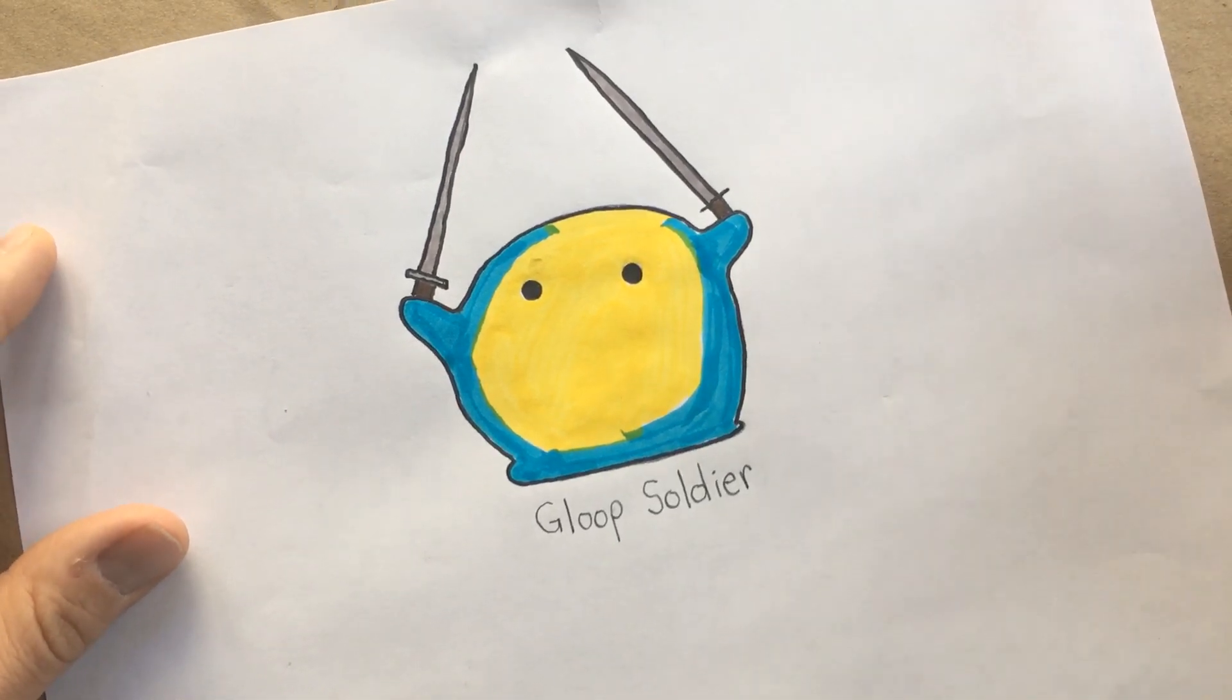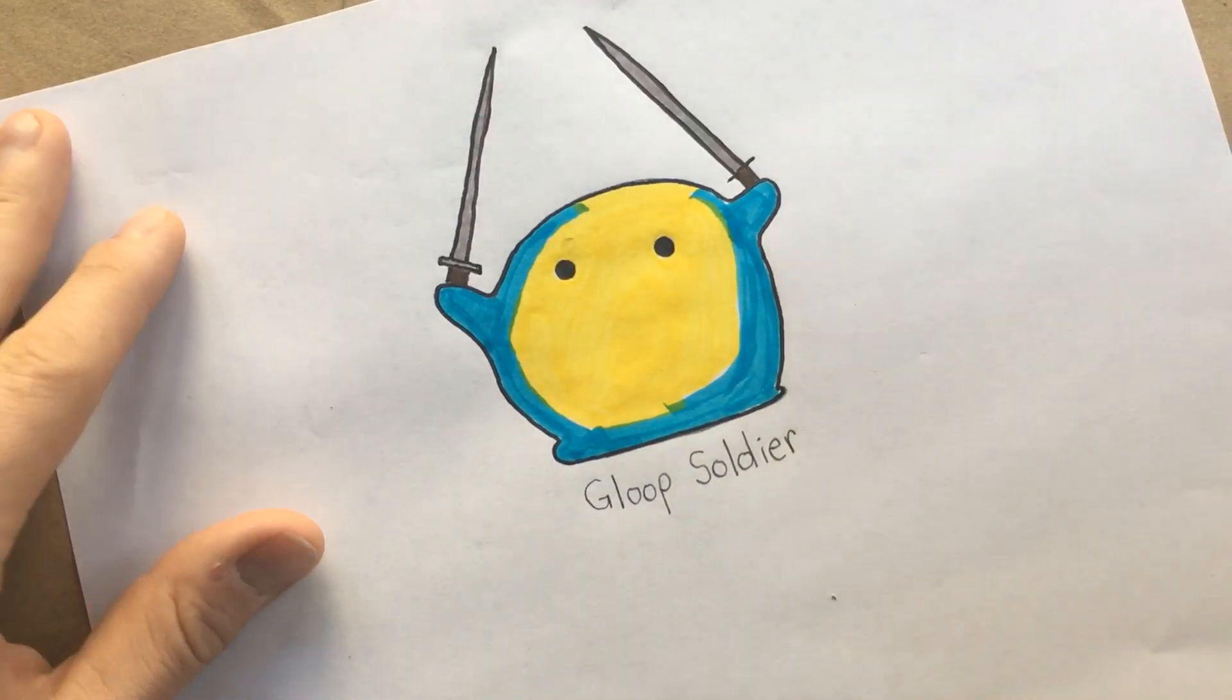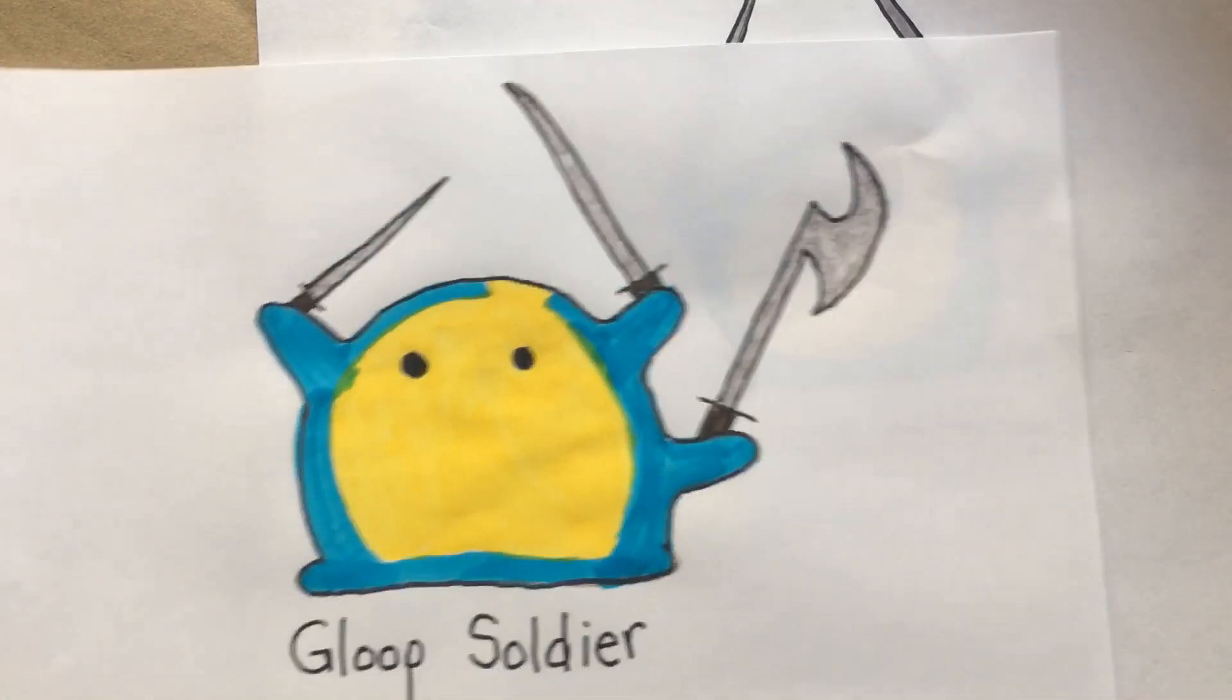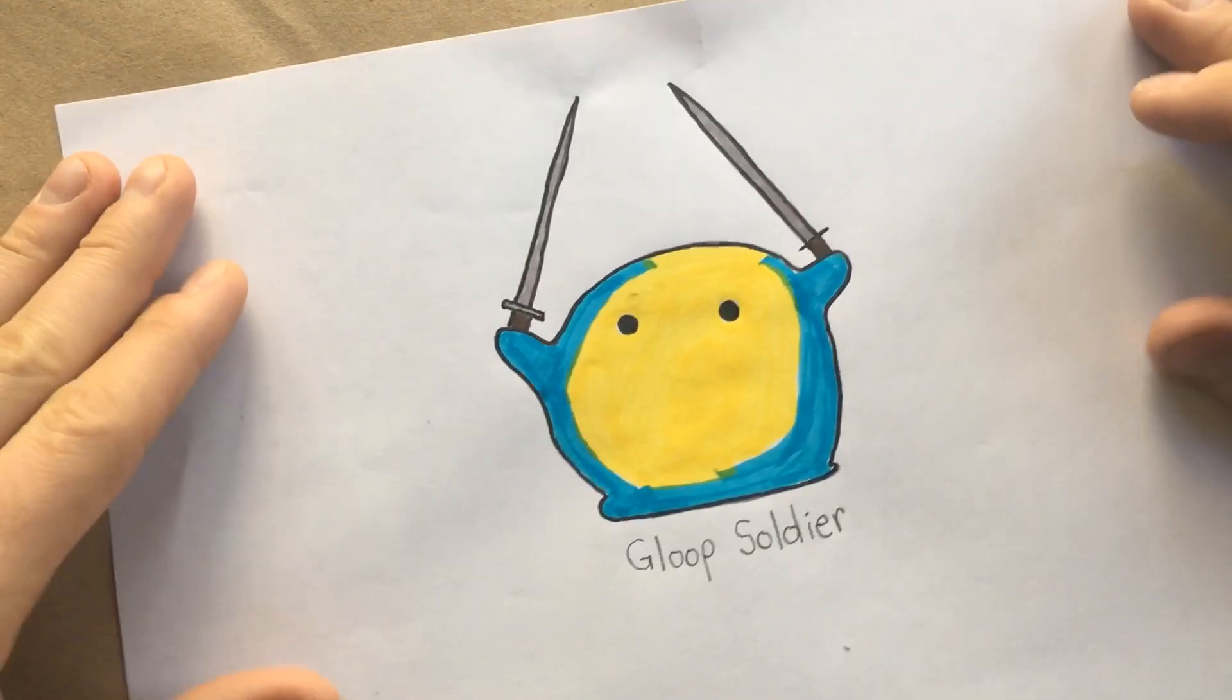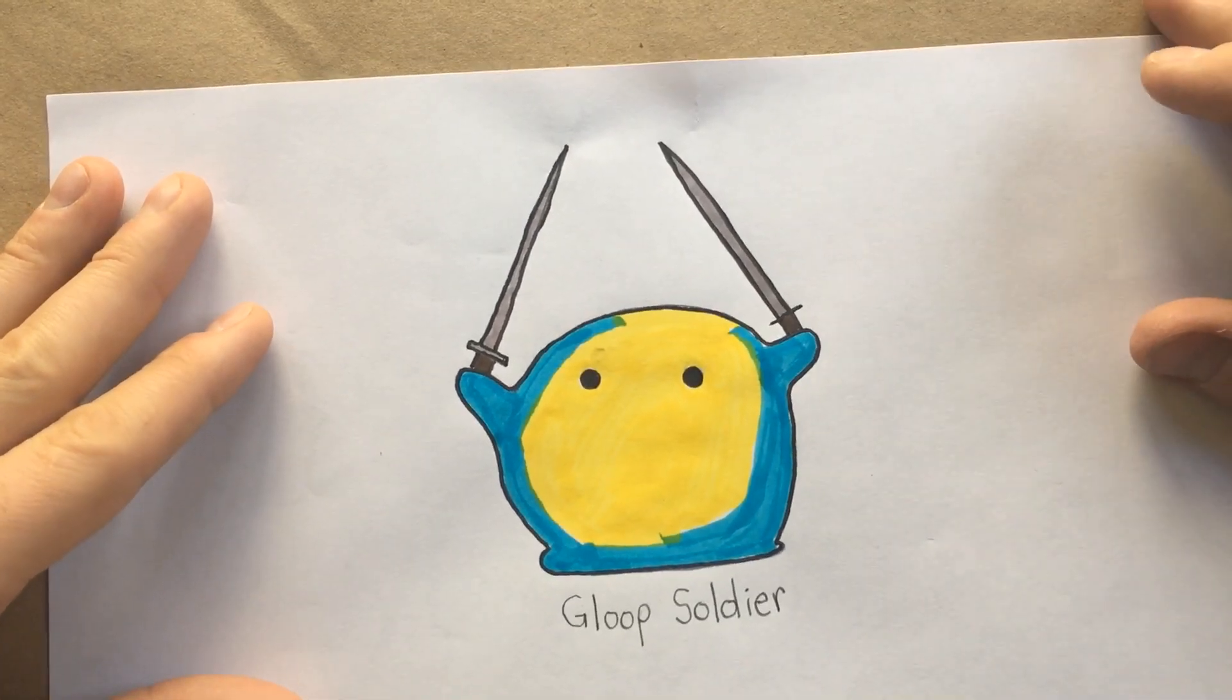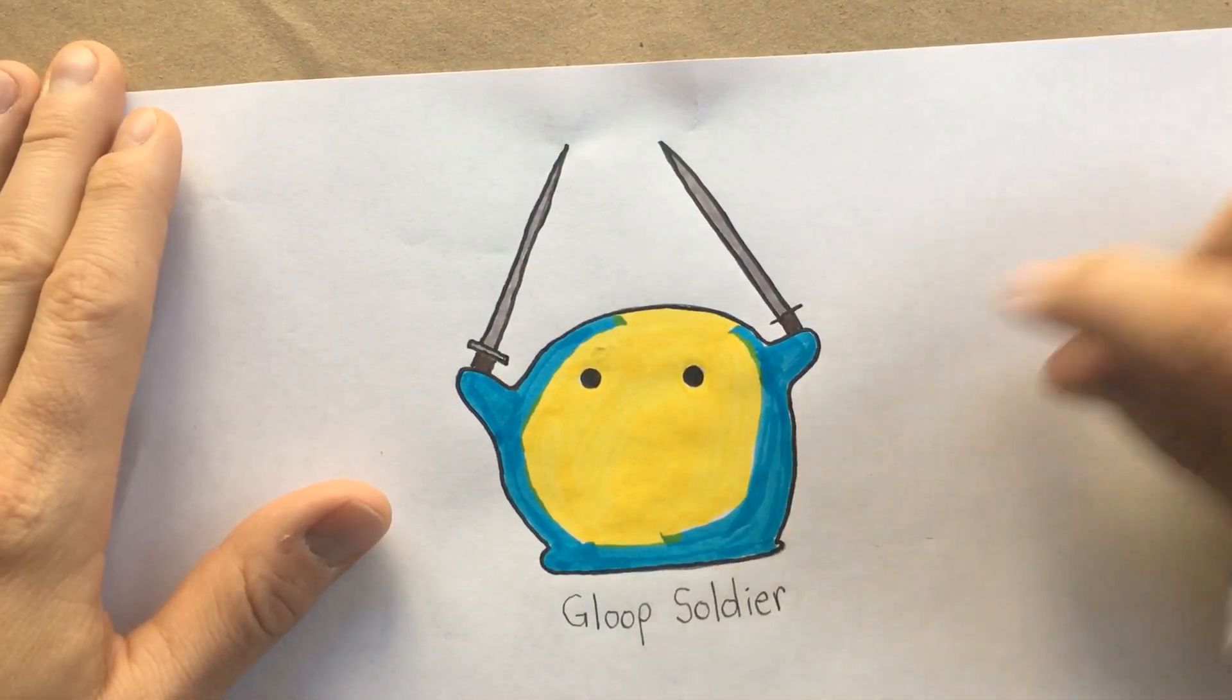So today we're going to draw a gloop soldier together. This is the one that I drew. I actually drew a couple, so you can see the differences. This one has multiple weapons. I imagine that these gloop soldiers are sort of like jello creatures. They're all squishy and blobby, they roll around, and they can stick as many arms out as they want.